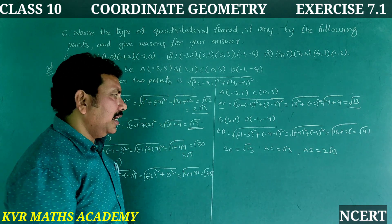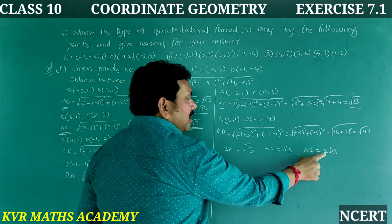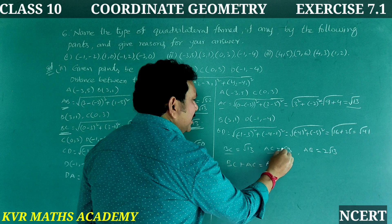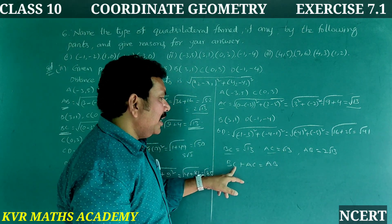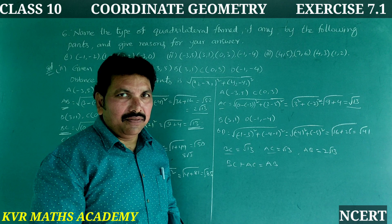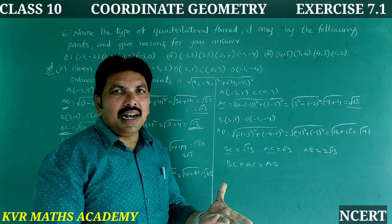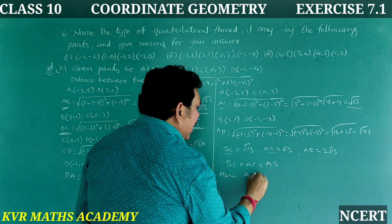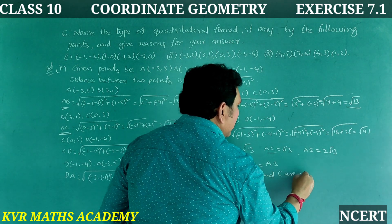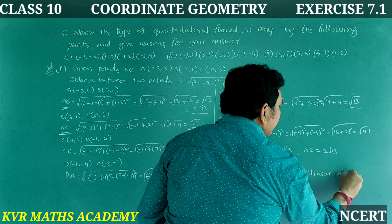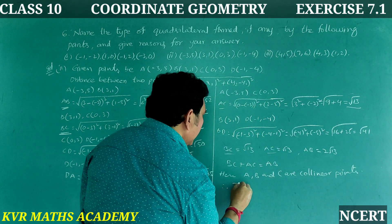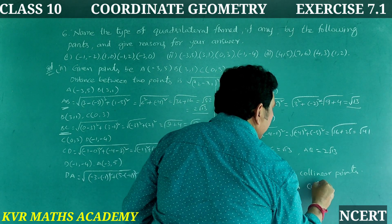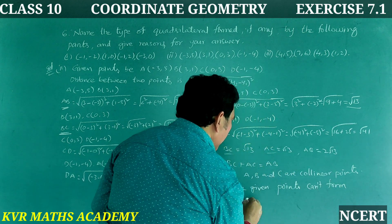AB = 2√13, BC = √13, and AC = √13. So BC plus AC equals √13 plus √13 equals 2√13 equals AB. Since BC plus AC equals AB, points A, B, and C are collinear. Therefore, the given points cannot form a quadrilateral.